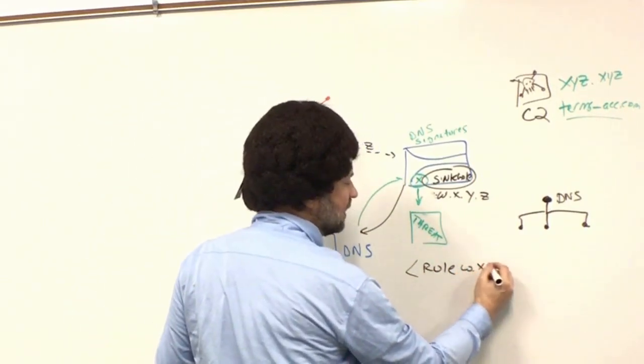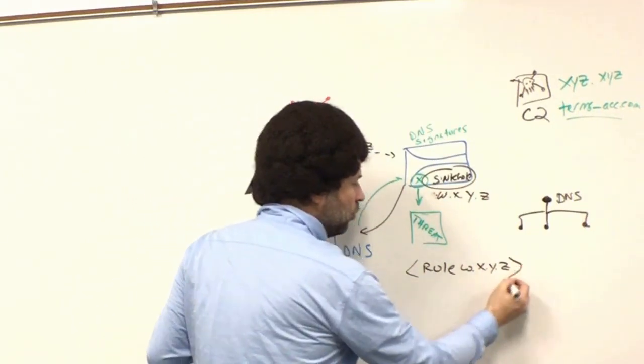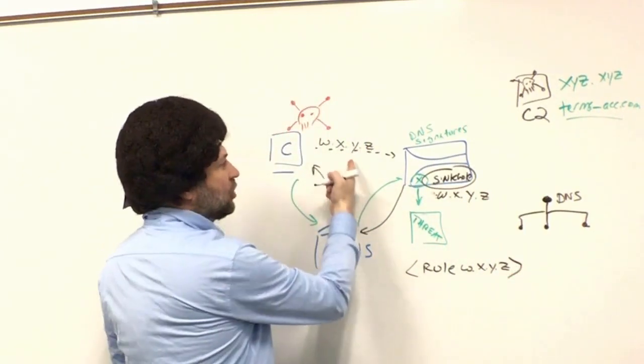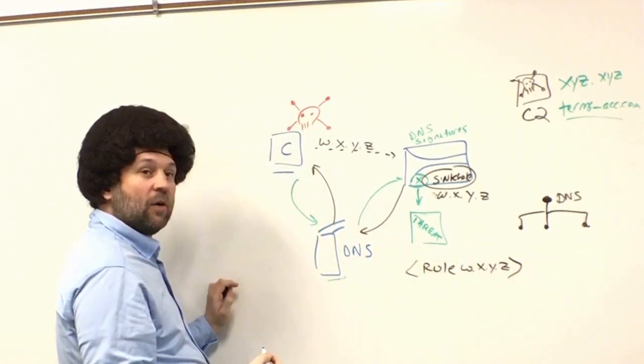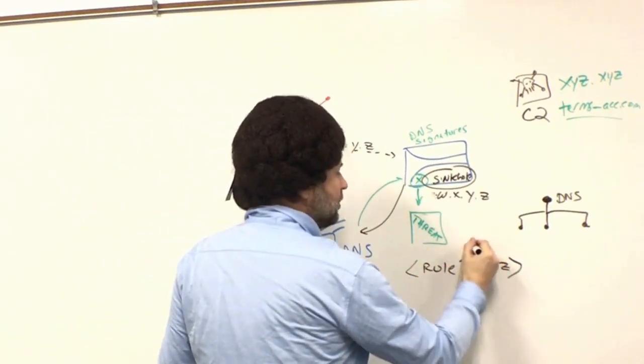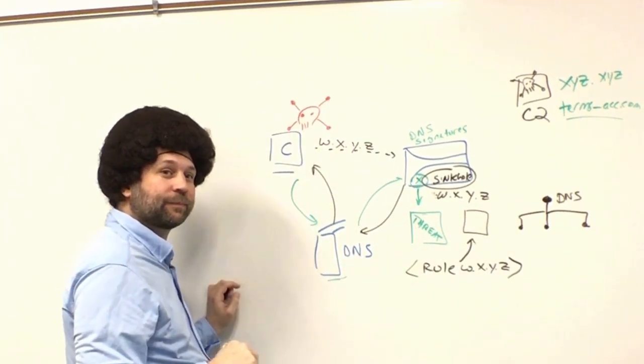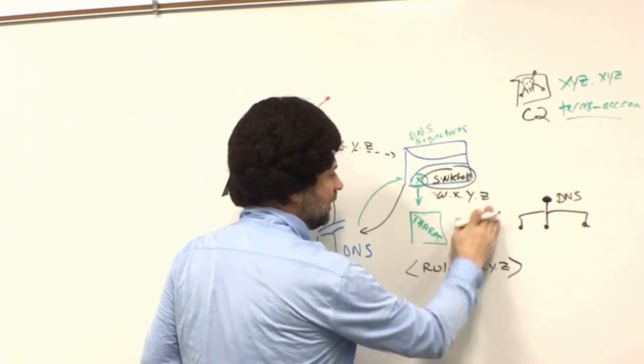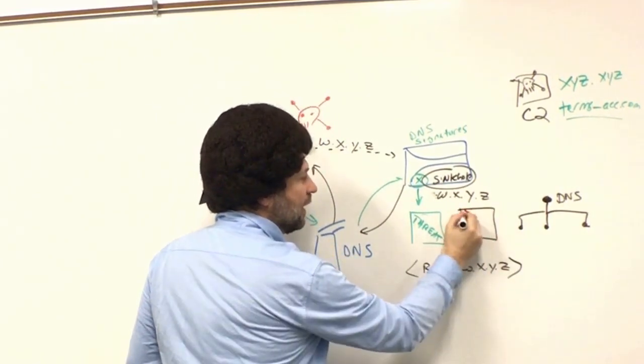In addition to configuring sinkhole, you also want to create a rule for that IP address. This is the part that sometimes gets left out of the conversation when we talk about sinkhole. You want a rule here that's going to catch traffic going to this IP address. This is going to now record traffic that hits this rule to the traffic log.